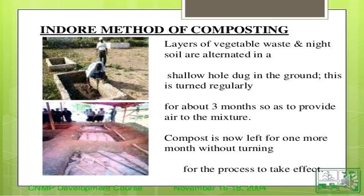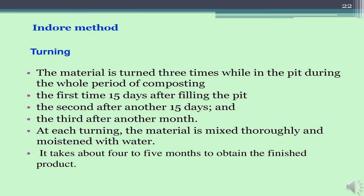In the Indore method, layers of vegetable waste and night soils are alternated in a shallow hole dug in the ground. This is turned regularly for about 3 months to provide air and proper decomposition. Compost is then left for one more month without turning. The material is turned 3 times while in the pit during the whole composting period: the first turning 15 days after filling, the second after another 15 days, and the third after one month. At each turning, material is mixed thoroughly and moistened with water. It takes about 4 to 5 months to obtain the finished product.